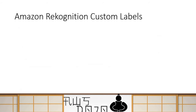Amazon Rekognition also comes with custom labels. When you use Amazon Rekognition normally, you don't create any models — the models are created and trained by Amazon. All you do is call those models via API. But if you are working in a particular industry or want a particular type of analysis, you might want to create your own custom model, and you can do that using Amazon Rekognition custom labels.